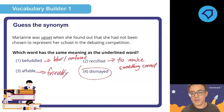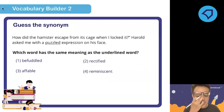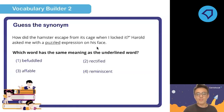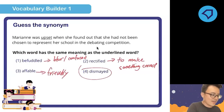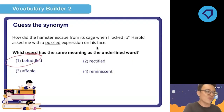Next vocabulary question: 'How did the hamster escape from its cage when I locked it?' Harold asked with a puzzled expression on his face. The correct answer is 'befuddled,' which means puzzled — blur or confused. I gave you the clue earlier when I said befuddled means blur or confused, so that was enough of a hint to answer this question.